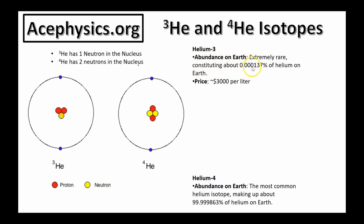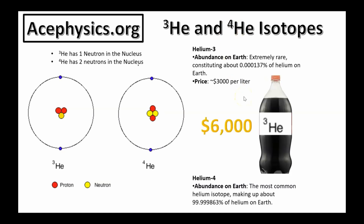Helium-3 is extremely rare, constituting about 0.000137% of helium on Earth. The price of helium-3 is roughly $3,000 per liter — if you were to buy a two-liter bottle, it would be $6,000, and with recent inflation probably a lot more. Helium-4 is the most common helium isotope, making up about 99.9998% of helium on Earth. It's not very expensive — in fact, they put it in children's balloons all the time.